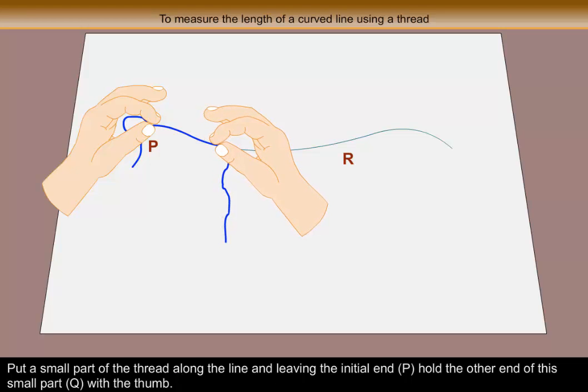Put a small part of the thread along the line and leaving the initial end P, hold the other end of the small part Q with the thumb.